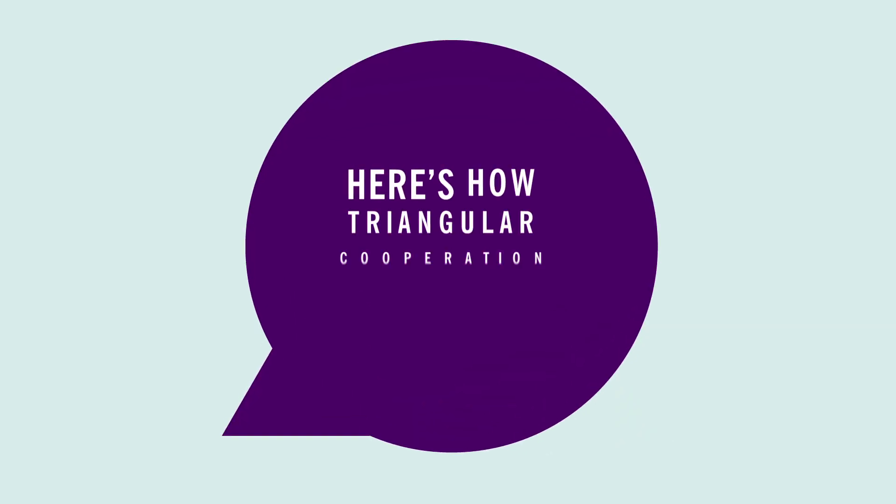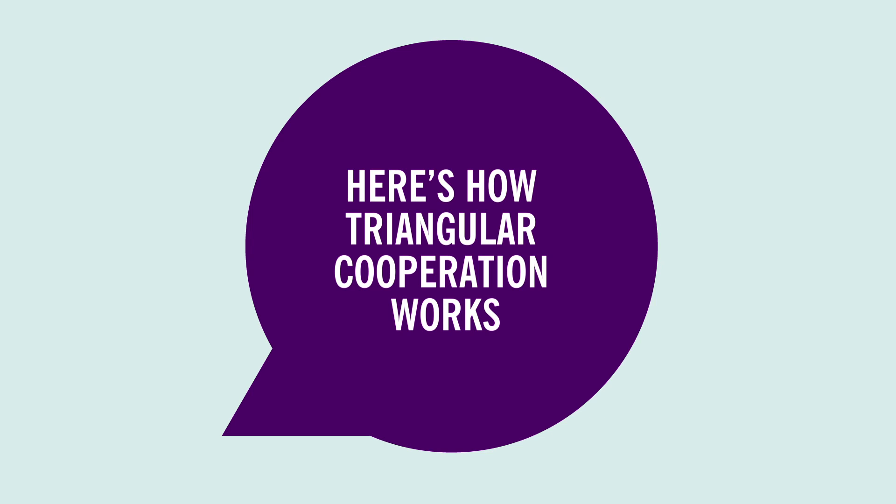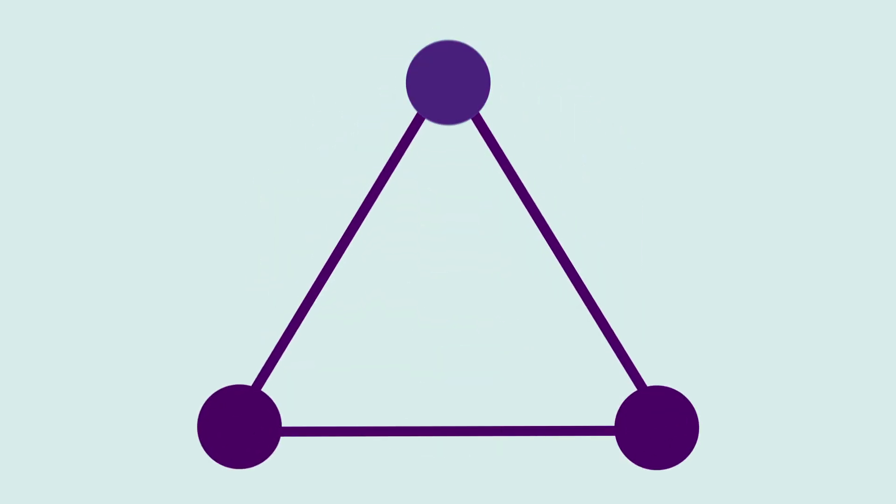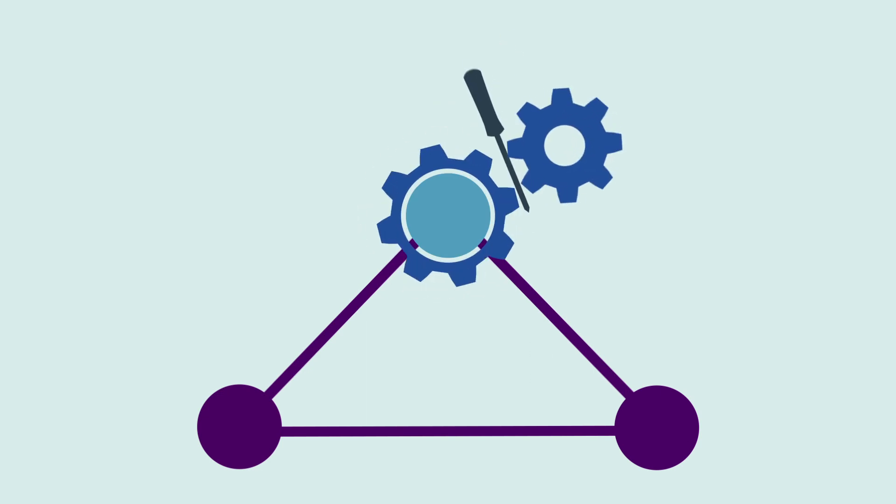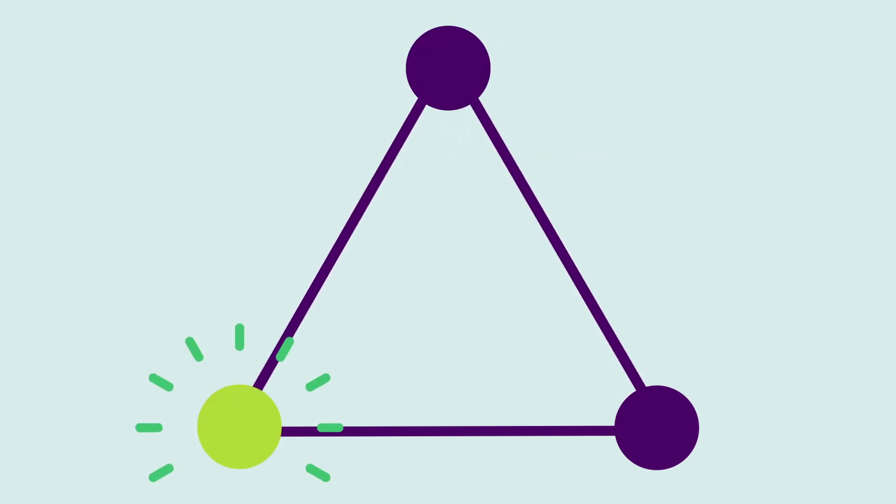Here's how Triangular Cooperation works. Three or more countries or organizations come together to address a particular development issue that one of them is facing. The facilitator helps connect the partners together.